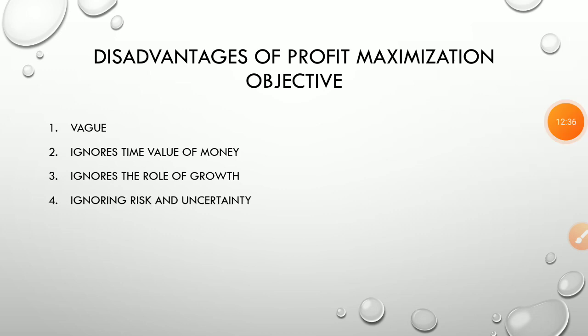Fourth disadvantage: ignoring risk and uncertainty. While evaluating projects, profit may be estimated by considering risk and uncertainty. In the future, there are many risks that may arise. However, profit maximization relies on estimated return on investment from projects without considering the risk involved in those projects. These are the disadvantages of the profit maximization objective.